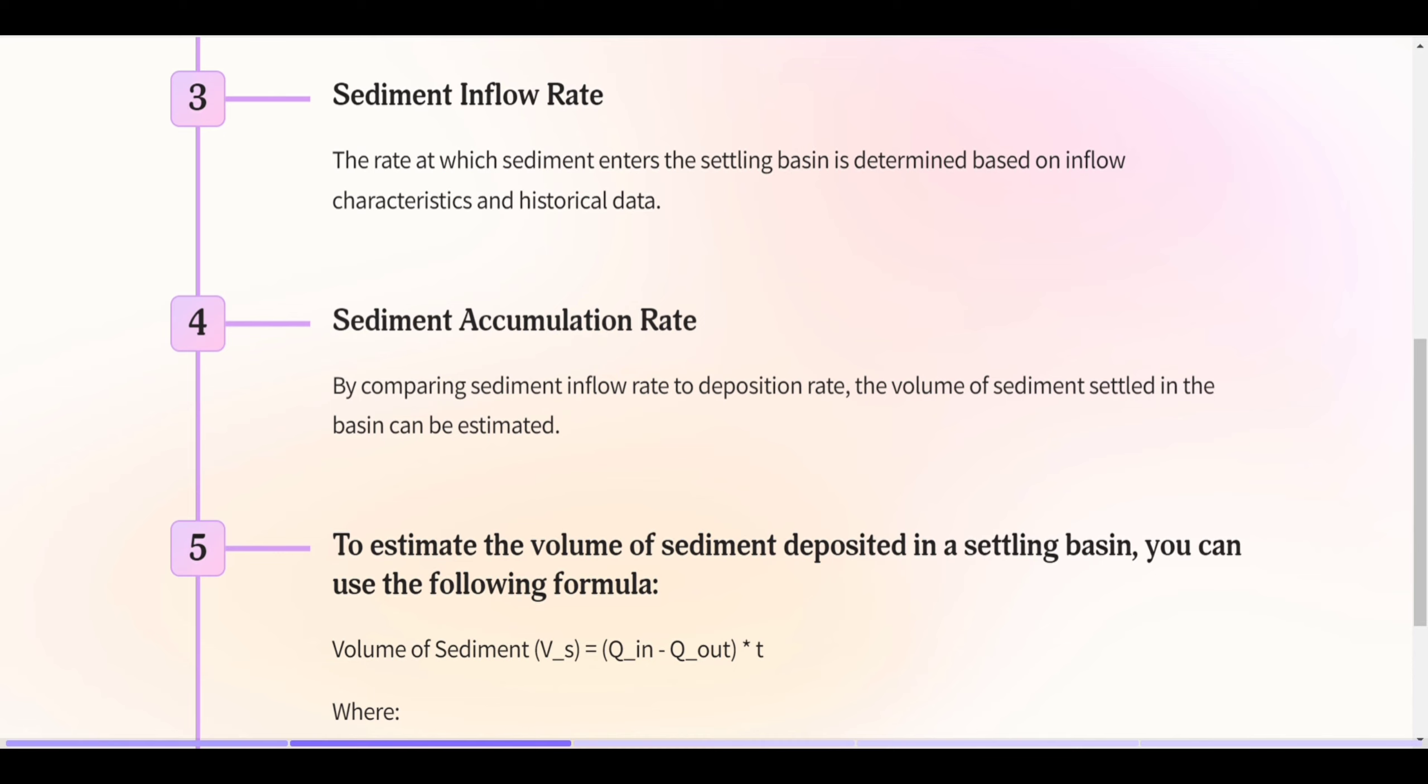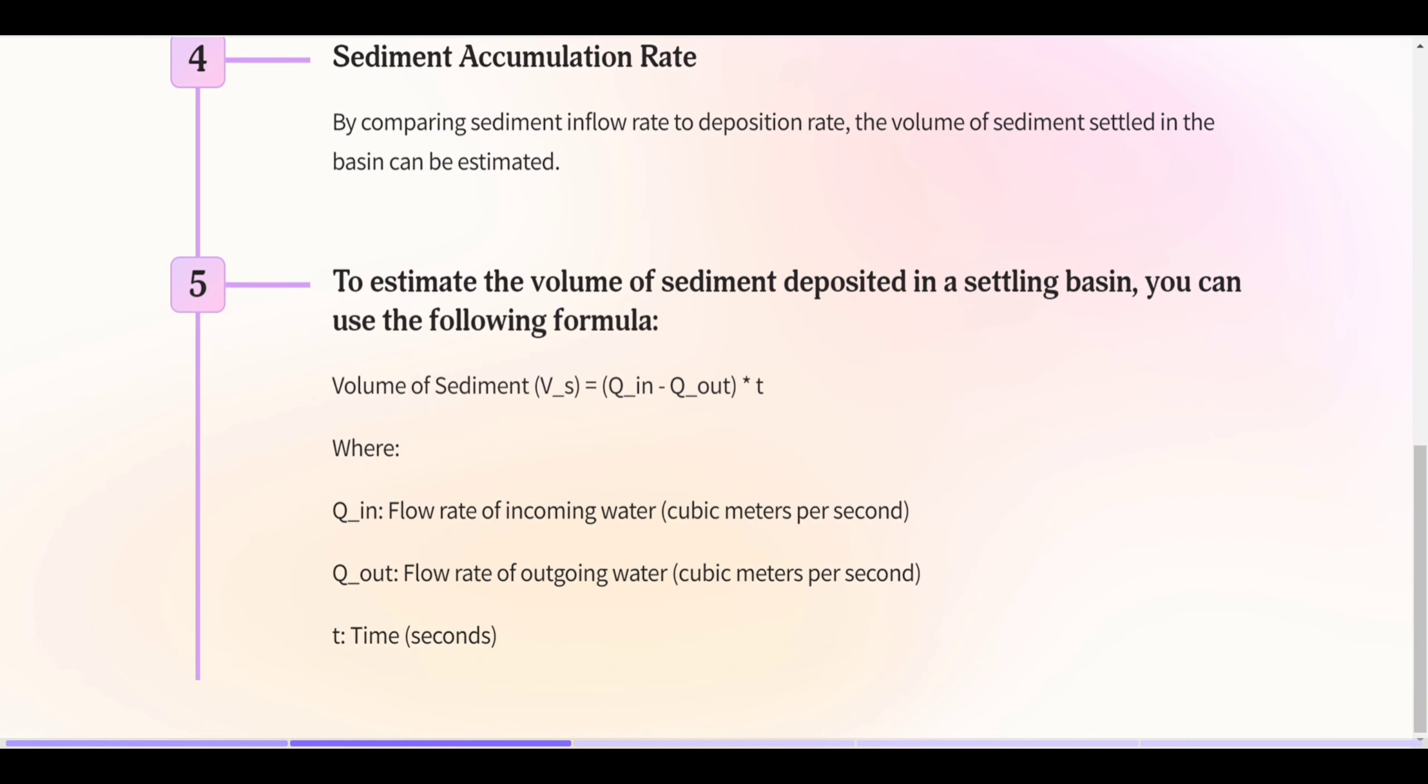To estimate the volume of sediment deposited in a settling basin, you can use the following formula, where Q_in is the flow rate of incoming water, Q_out is the flow rate of outgoing water, and T is time.